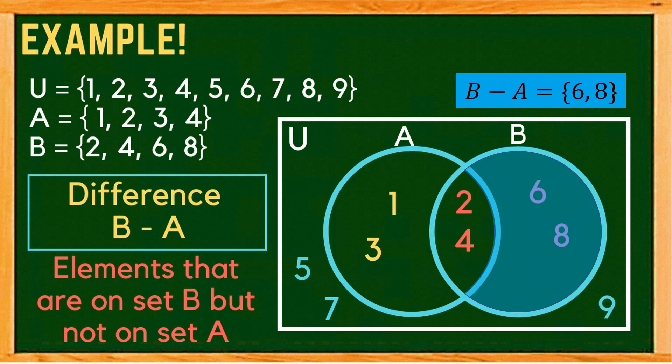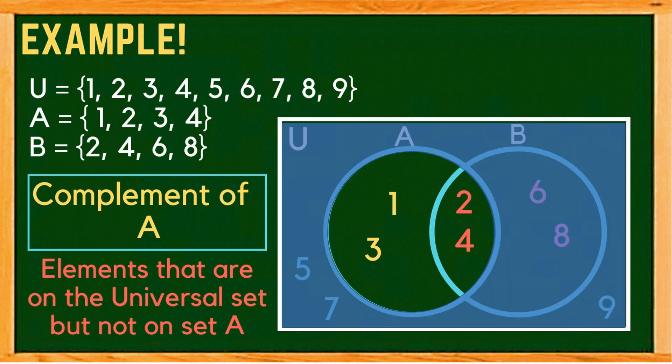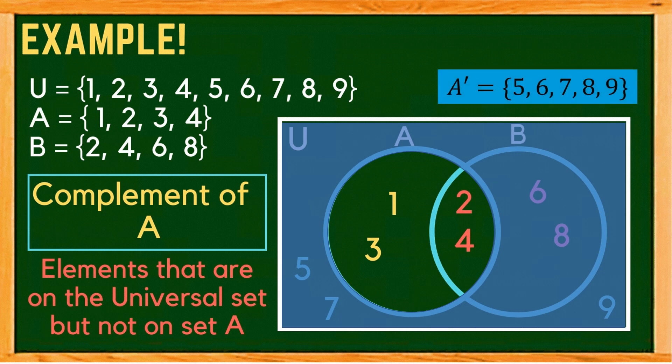What if we are asked to find the complement of set A? The complement of set A are the elements in the universal set but not in set A. On our Venn diagram, the shaded region is what we call the complement of set A, and its elements are 5, 6, 7, 8, and 9.